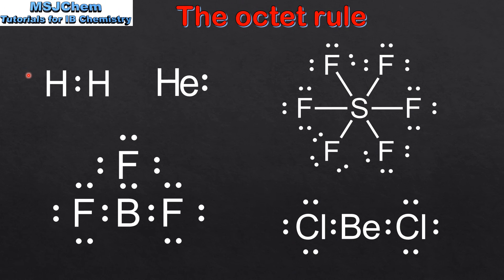Finally, we look at some exceptions to the octet rule. The octet rule — octet meaning 8 — refers to atoms that are stable with 8 electrons in their outer energy level. However, there are atoms which are stable with less than 8 electrons in their outer energy level. For example, hydrogen and helium are both stable with 2 electrons in their outer energy level. Boron is stable with 6 electrons in its outer energy level. Beryllium is stable with 4 electrons in its outer energy level.